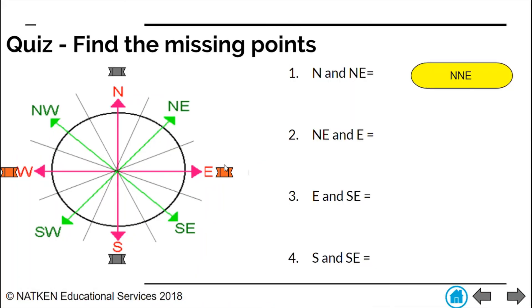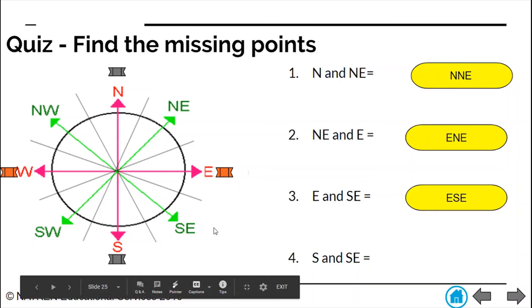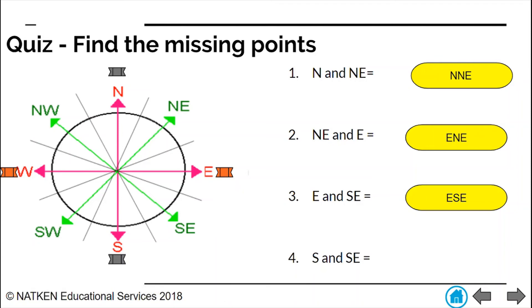Now let's fill in these missing points. Between north and northeast here we have north north east. Between north east and east, remember east is our princess. This was from the example. So we have east north east. Now for the next one, east again with south east. Which one do we put first? Yes you got it. We put east first. So it would be east south east. And for the next part we have south and south east. Which one do we put first again? That's right. It is south. So we end up with south south east.